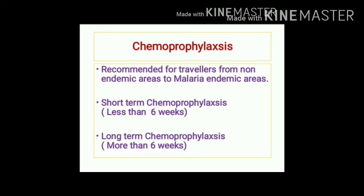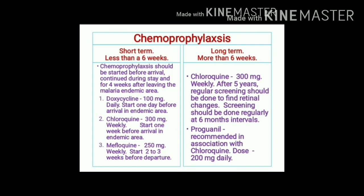Chemoprophylaxis for malaria is mainly recommended for travelers going from non-endemic to malaria-endemic areas. Short-term chemoprophylaxis is for less than six weeks; long-term is for more than six weeks. For short-term, doxycycline, chloroquine, or mefloquine can be used. These drugs should be started before entering endemic areas, taken during the entire stay, and continued for four weeks after leaving.